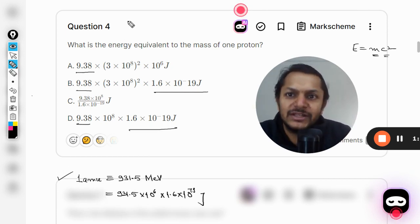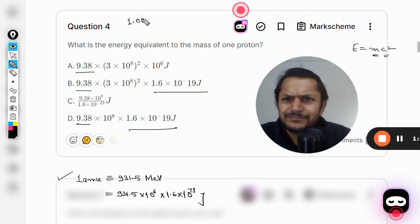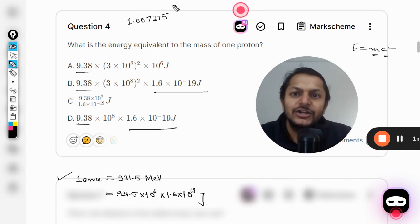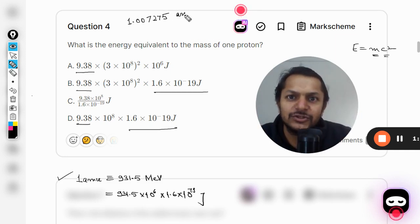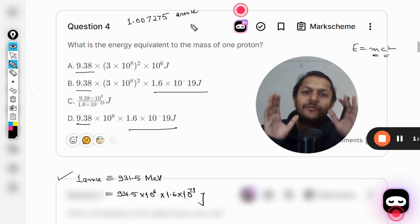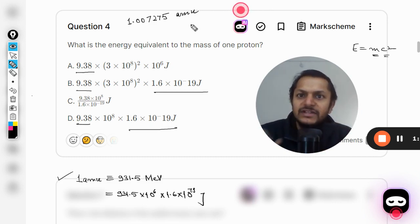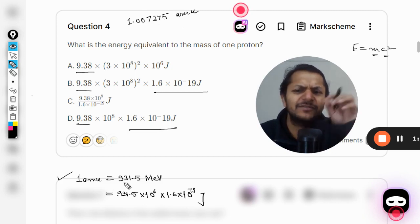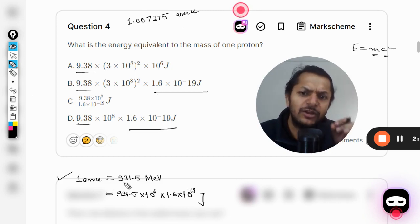If I remember it exactly, it is 1.007275 amu. I'm not sure about this, something like that is there. So this is the mass of one proton. Obviously it is more than one amu, and so there will be slight variation in the energy.